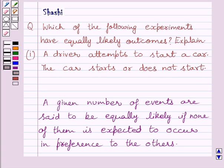First of all, let us understand what are equally likely events. A given number of events are said to be equally likely if none of them is expected to occur in preference to the others. Or we can say, events whose probabilities are equal are called equally likely events.